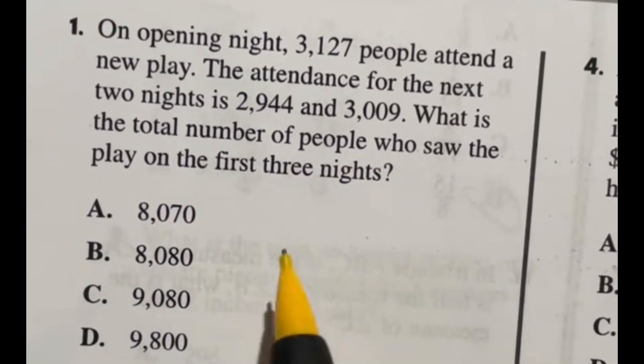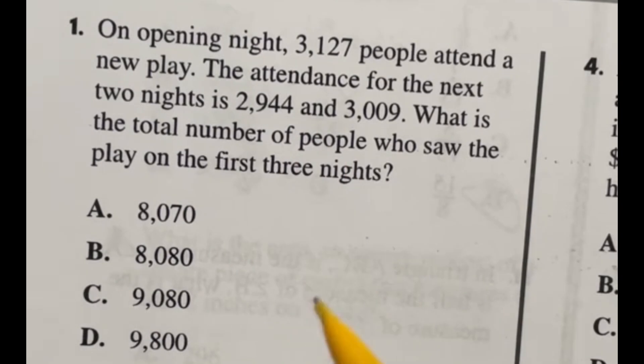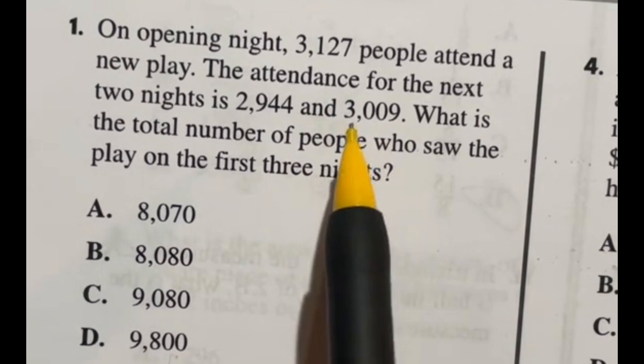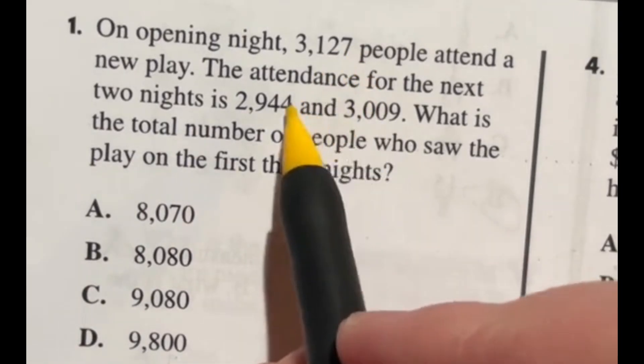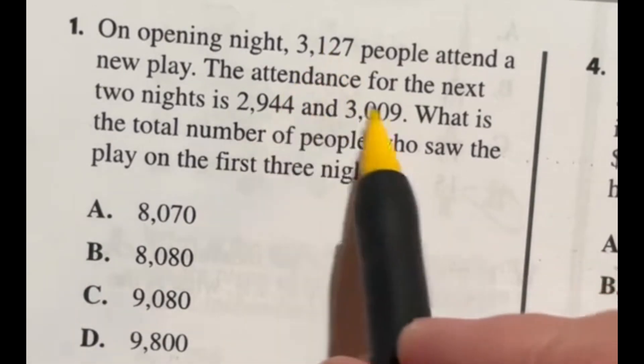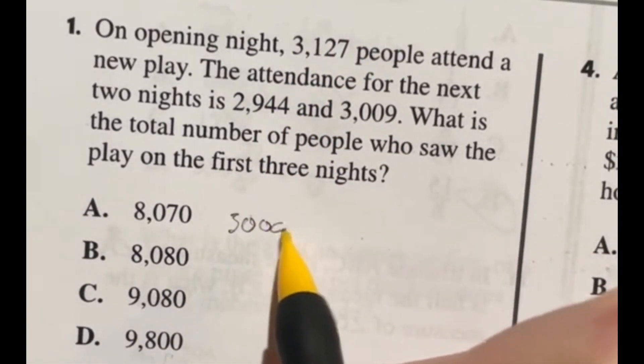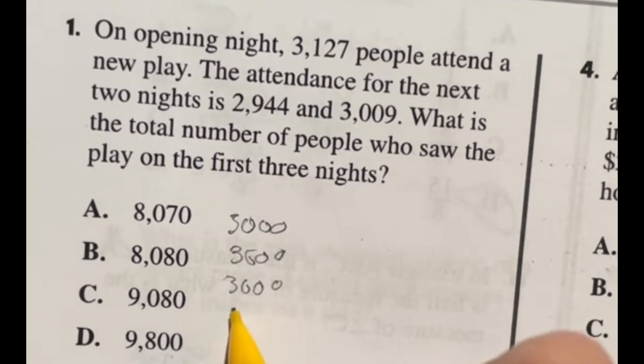Now obviously you could line this all up and go ahead and add them up and go through the process. But the problem is there's no calculator on this test and they're really kind of testing for your speed at this point. So although you could add those up, it probably is not within your best interest to do so like in the long form lining them up ways. Instead, what I would do is quickly look at these and notice that all three of them are about 3,000. So if we have 3,000 three times, that means we have about a total of 9,000.